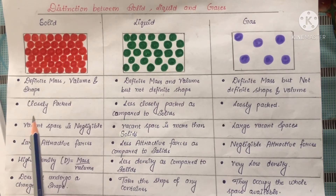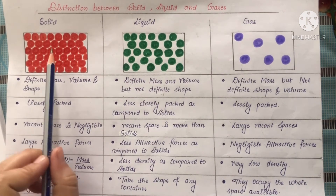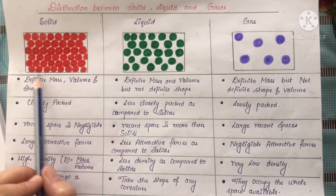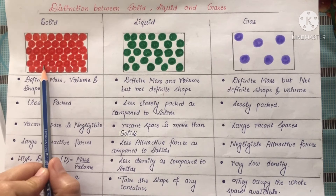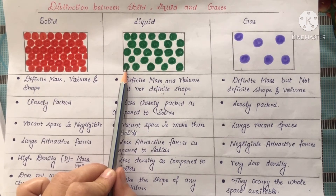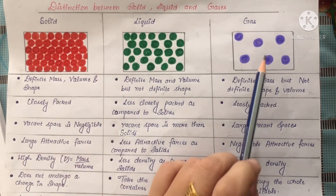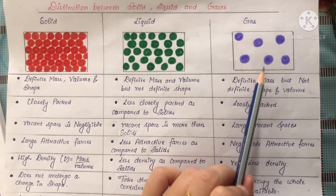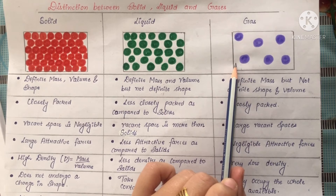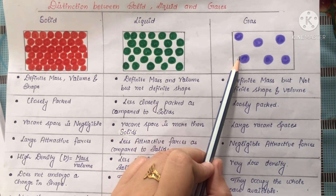Next, in case of solids, the particles are closely packed — you can look at here, the particles are very closely packed. In case of liquids, they are less closely packed as compared to that of the solid. And in case of gases, the particles are loosely packed, means they are very far away from each other.